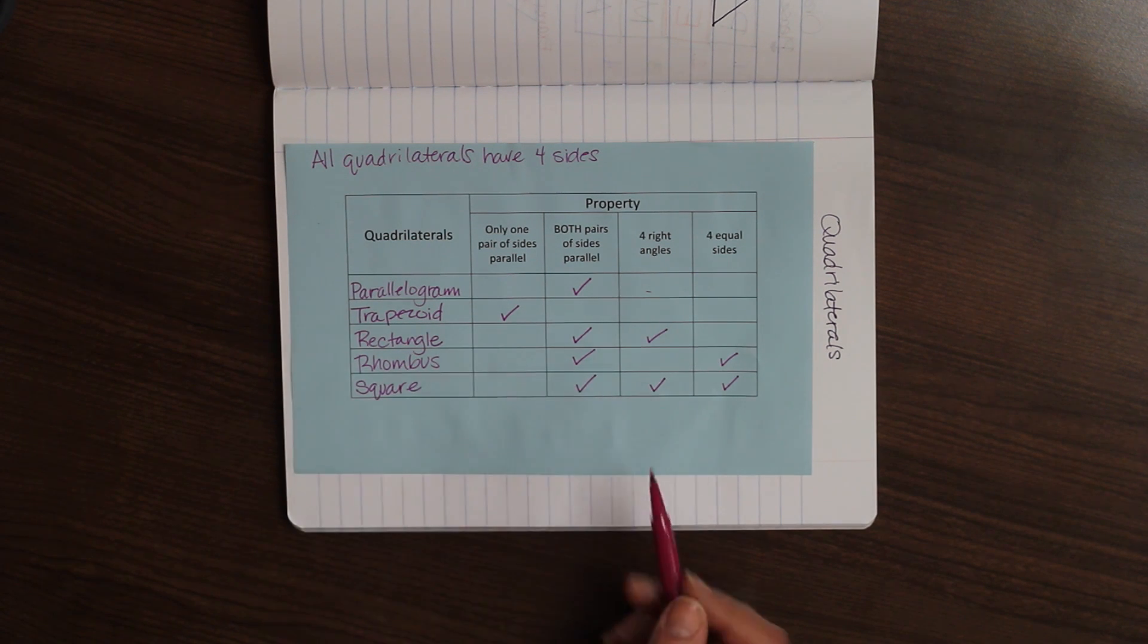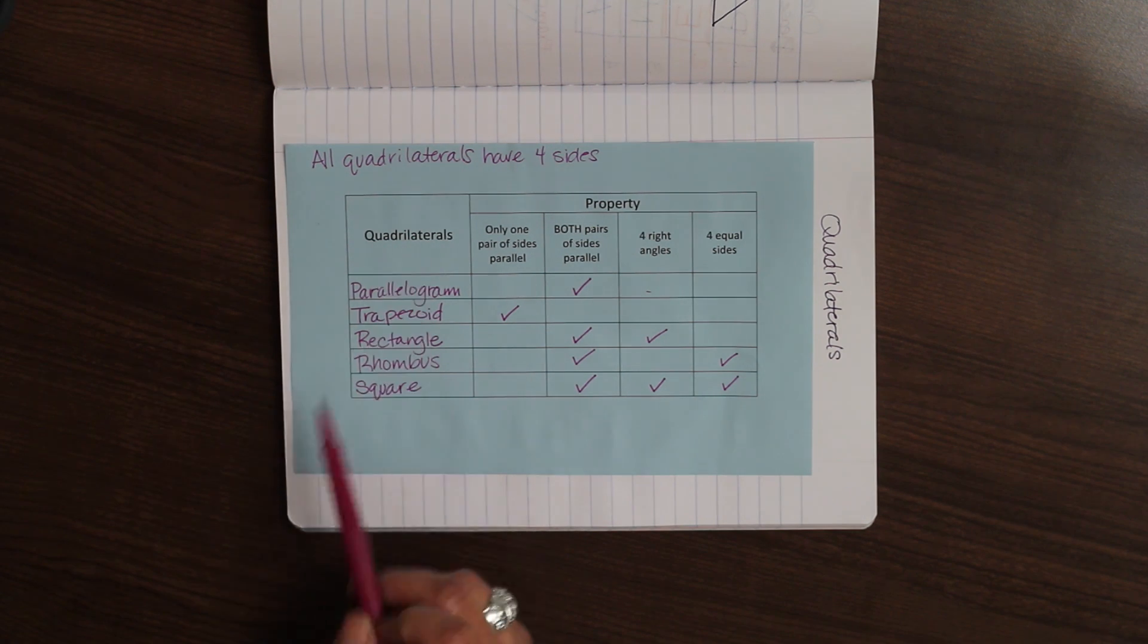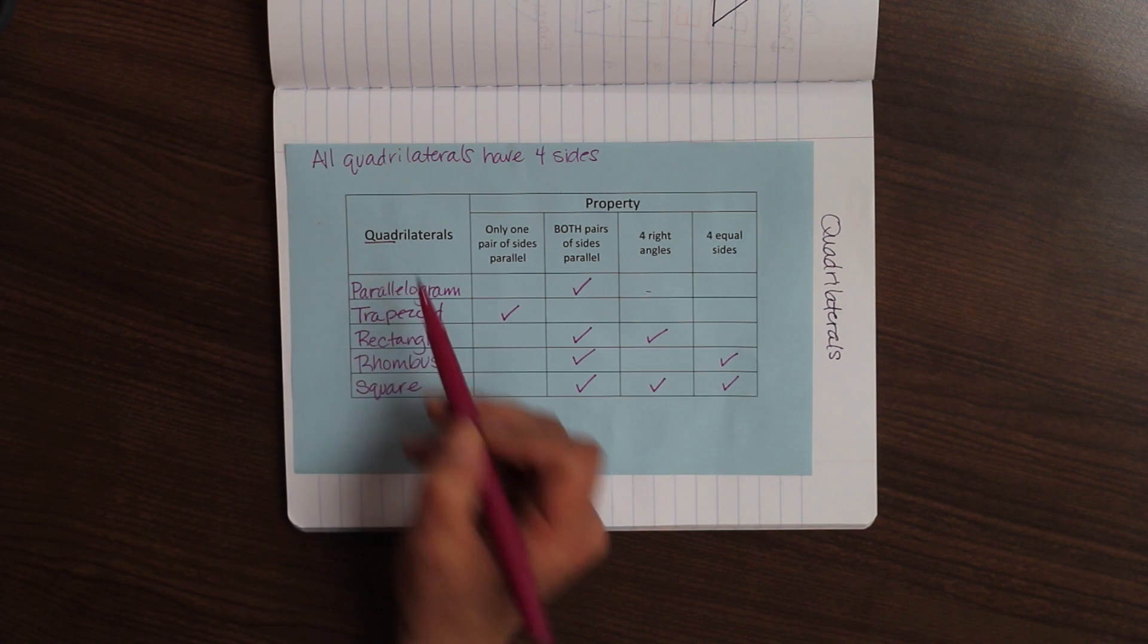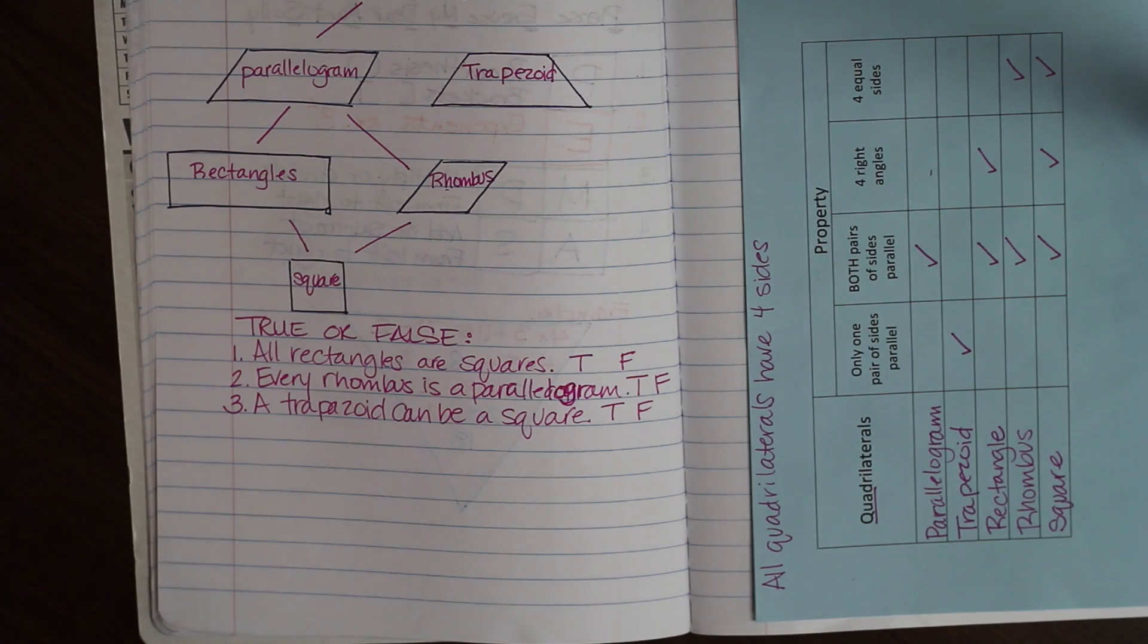So these are all properties of quadrilaterals. And as you see, all of these things are quadrilaterals. So remember the quad means that it's four. So now it's your turn.